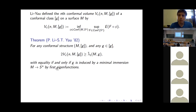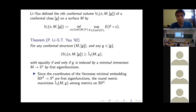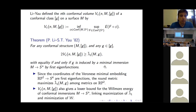An immediate consequence: the canonical Veronese minimal embedding of RP² into S⁴ is mapped by first eigenfunctions of the round metric on RP². By the Li-Yau theorem, the round metric on RP² maximizes the normalized first eigenvalue among all metrics. This conformal volume also gives a lower bound for the Willmore energy of conformal immersions into Sⁿ, linking maximization of λ̄₁ with minimization of Willmore energy.